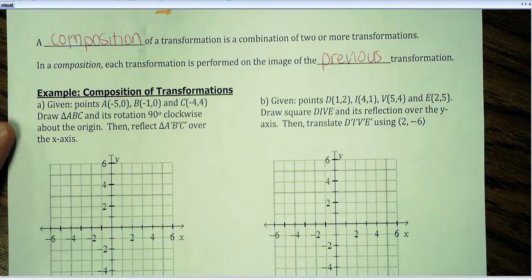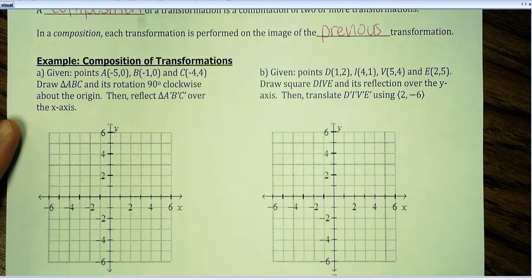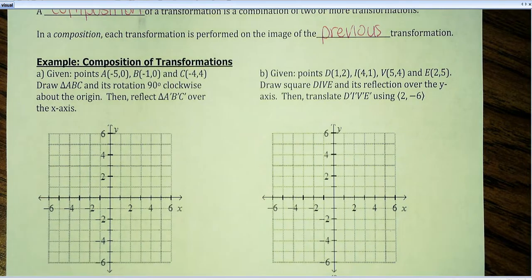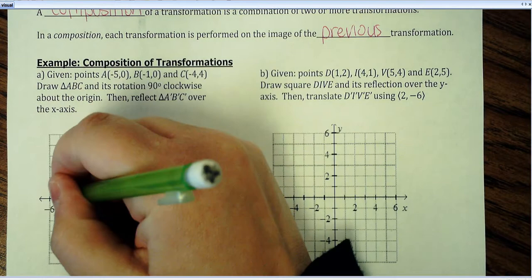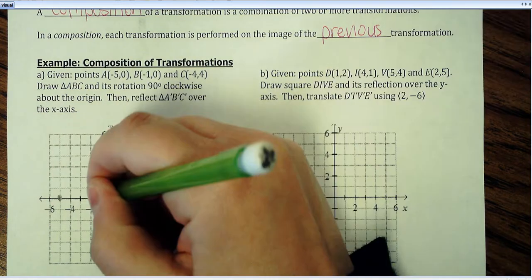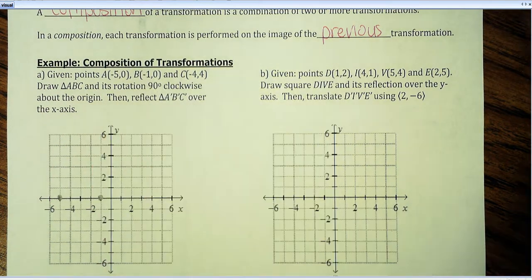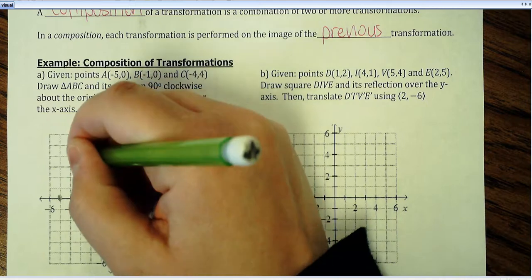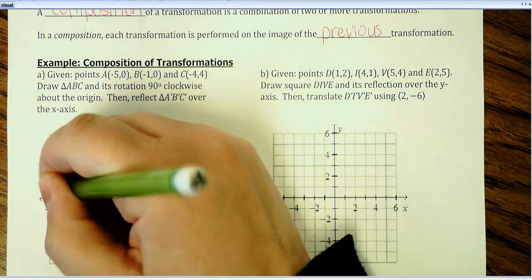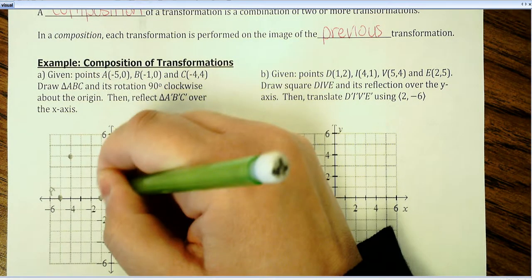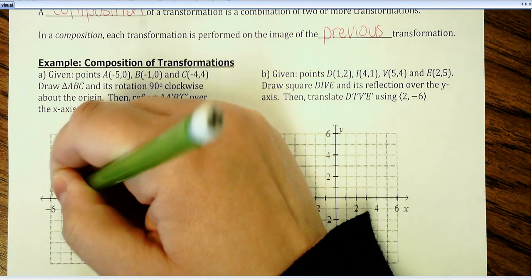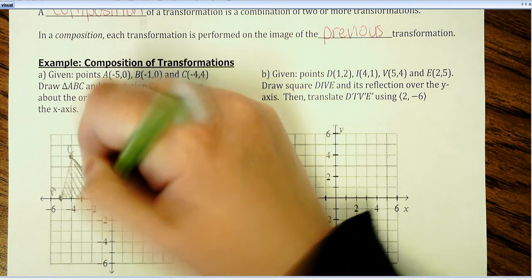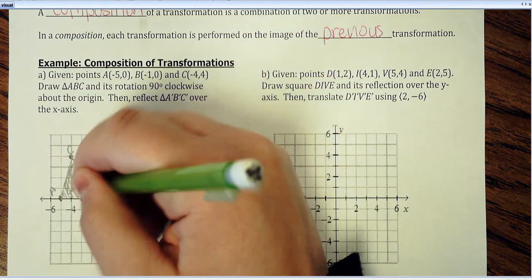So I'm going to start out and just write down for you guys the original figure here. So ABC is going to be a triangle. So A is at negative 5, 0. B is at negative 1, 0. And C is at negative 4, 4. Just going to call each of these A, B, and C. Connect the dots here to make a triangle. Just going to shade it in a little bit to make it show up a little bit better.